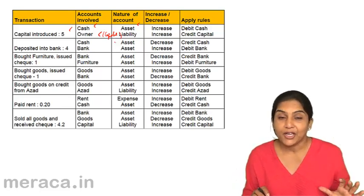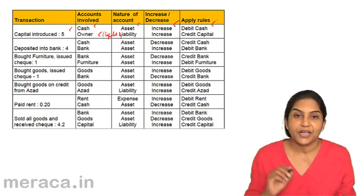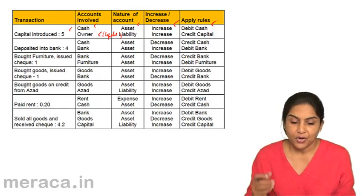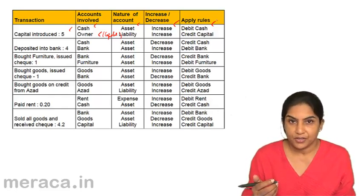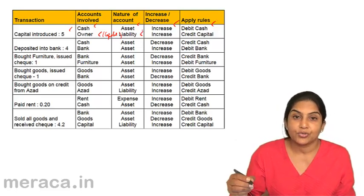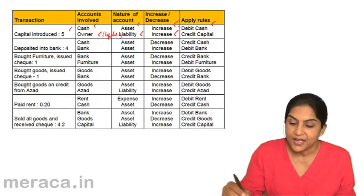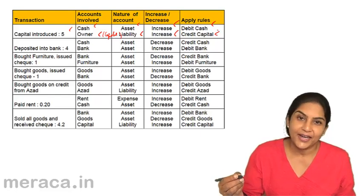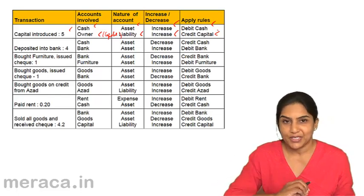Cash has come into the business — there is an increase in cash, therefore we debit cash. What about the owner's account? Money is owed to the owner; the business has a liability to the owner. Liability has increased, therefore we credit the owner's account — we actually credit capital account. Owner's account is represented by capital account.